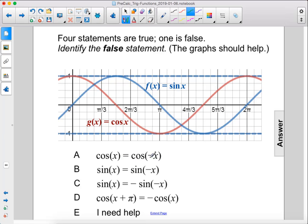Cosine x equals cosine negative x. Cosine of negative x is gonna be a reflection across the y-axis, and cosine, shown here in red, is already symmetrical across the y-axis.